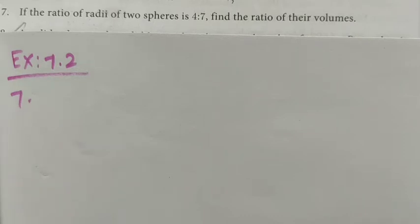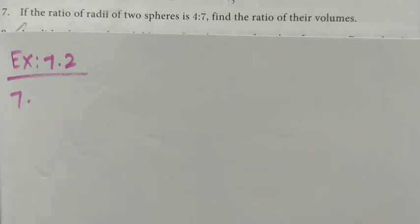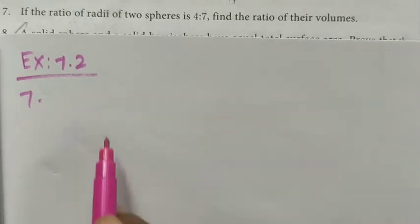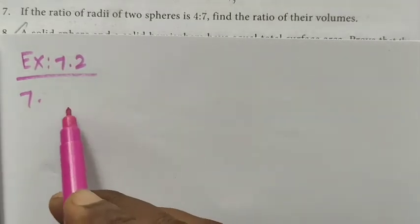Hi students, class 10, exercise number 7.2, question number 7. If the ratio of radii of two spheres is 4 is to 7, find the ratio of their volumes. Given the ratio of radii of spheres, let me take